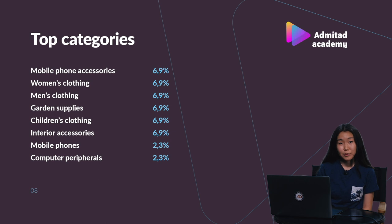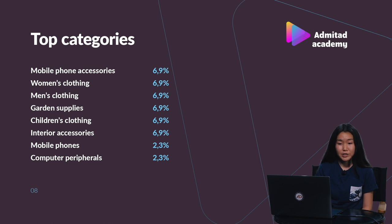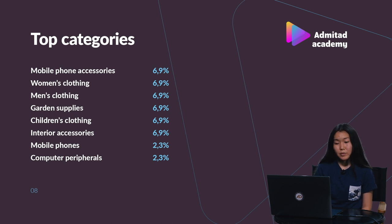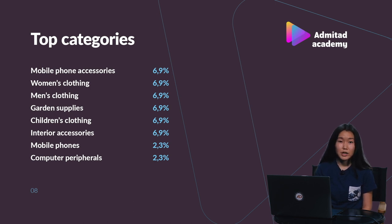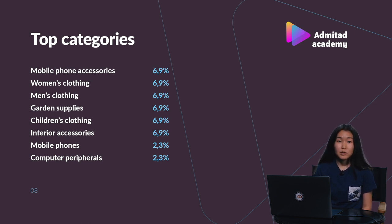But let's say you were connected to the program. What product categories should you start with to earn more? The top categories are the categories that offer the highest commission rates. Mobile phone accessories, women's, men's, children's clothing, and home and garden items offer 6.9% commission rate. Mobile phones and computer peripherals also belong to the top categories. Even though the commission rate is 2.3%, because the average order value is quite high, publishers' reward can be significant.